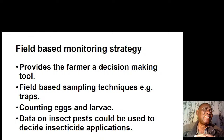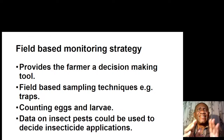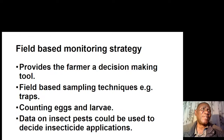Data on insect pests can be used to decide on insecticide applications. We have a typical example of cotton spraying strategies — pest spraying strategies based on monitored data.